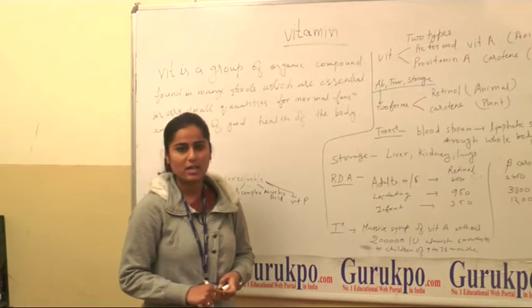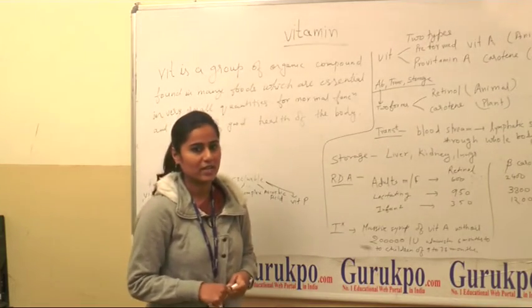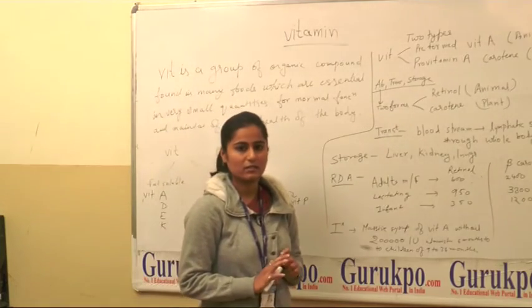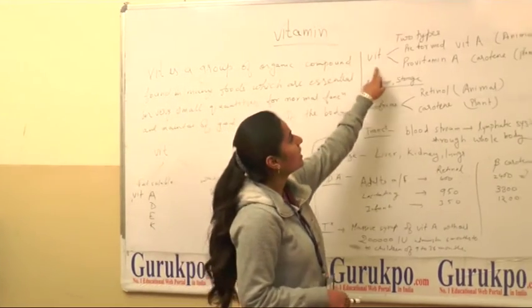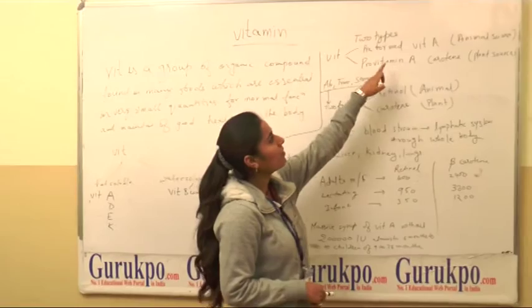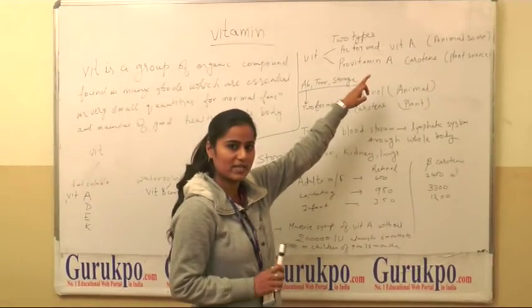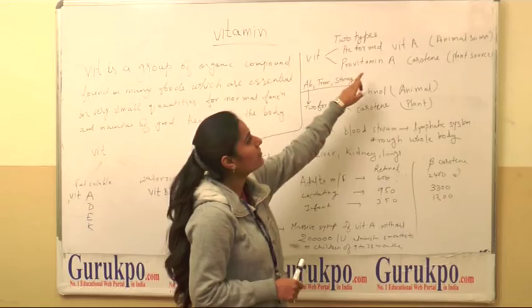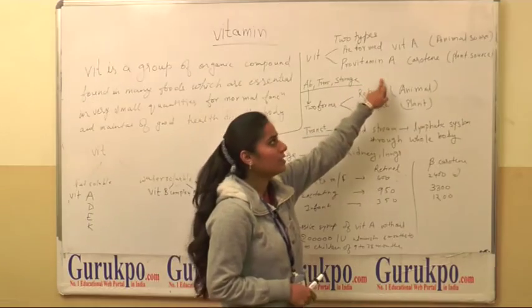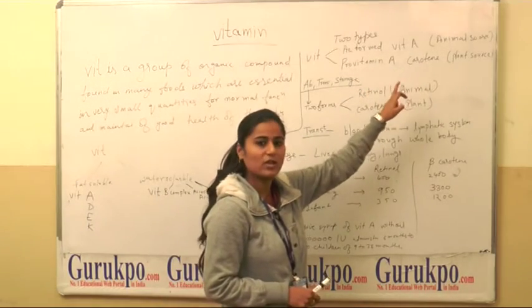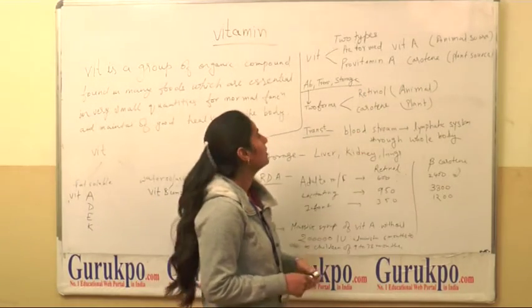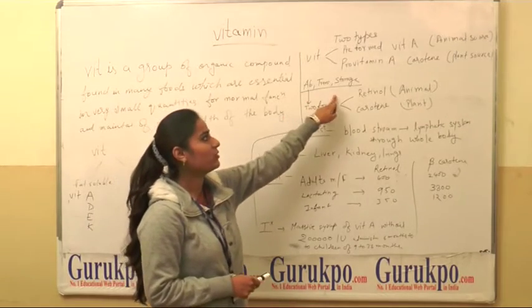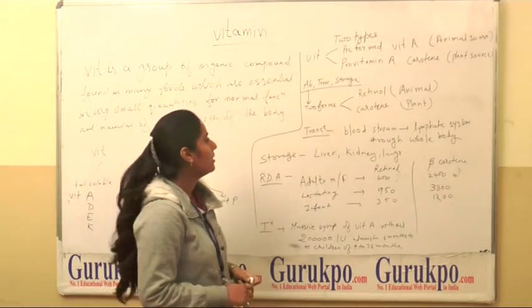Now we will discuss about vitamin A. Vitamin A is of two types: pre-formed vitamin A, which is present in animal sources, and pro-vitamin A, which is present in plant sources, also called carotene. What is the absorption, transport, and storage of vitamin A?